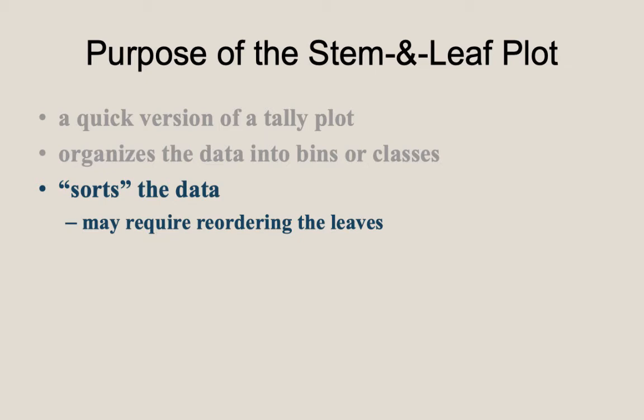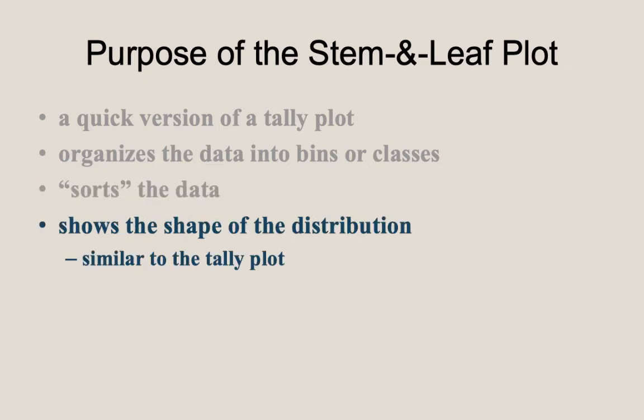And if we pass through the raw data, it is unlikely that the leaves will naturally end up in order. If you revisit the example just demonstrated, it just so happened that the exam scores appeared in an order that resulted in the leaves being reported in ascending order. But this example is constructed to do so. This doesn't often happen in real data. And four, it shows us the shape of the distribution, similar to what we would get with a tally plot.